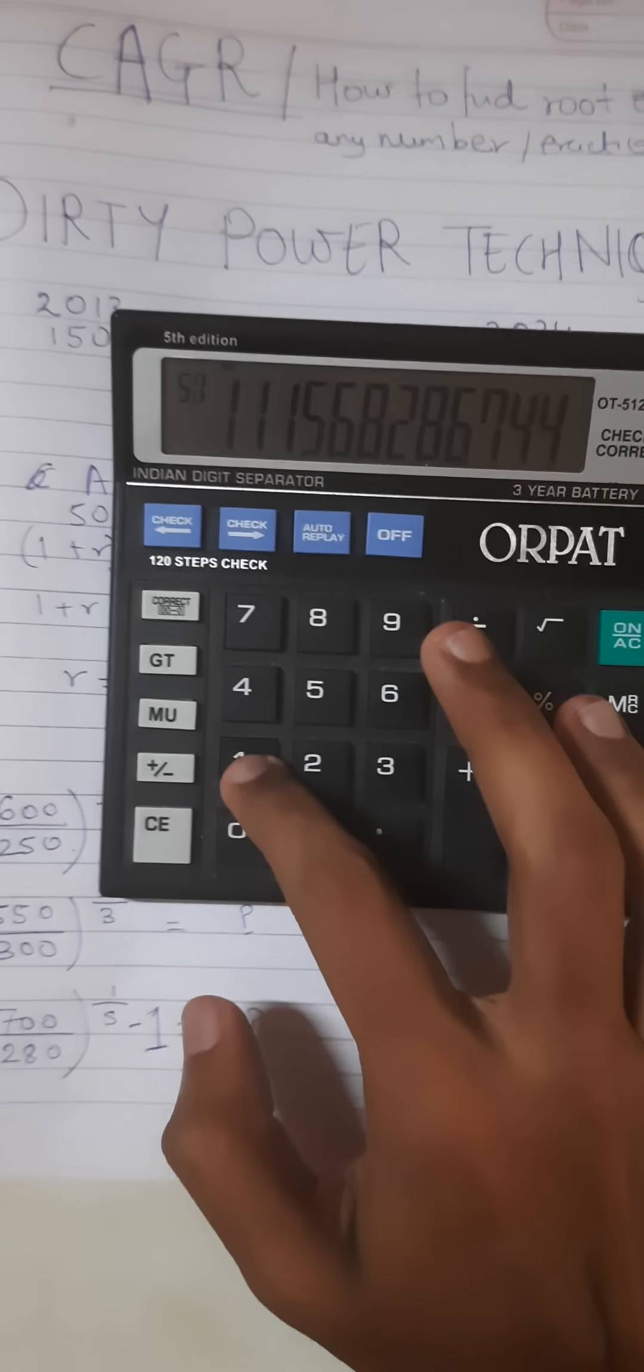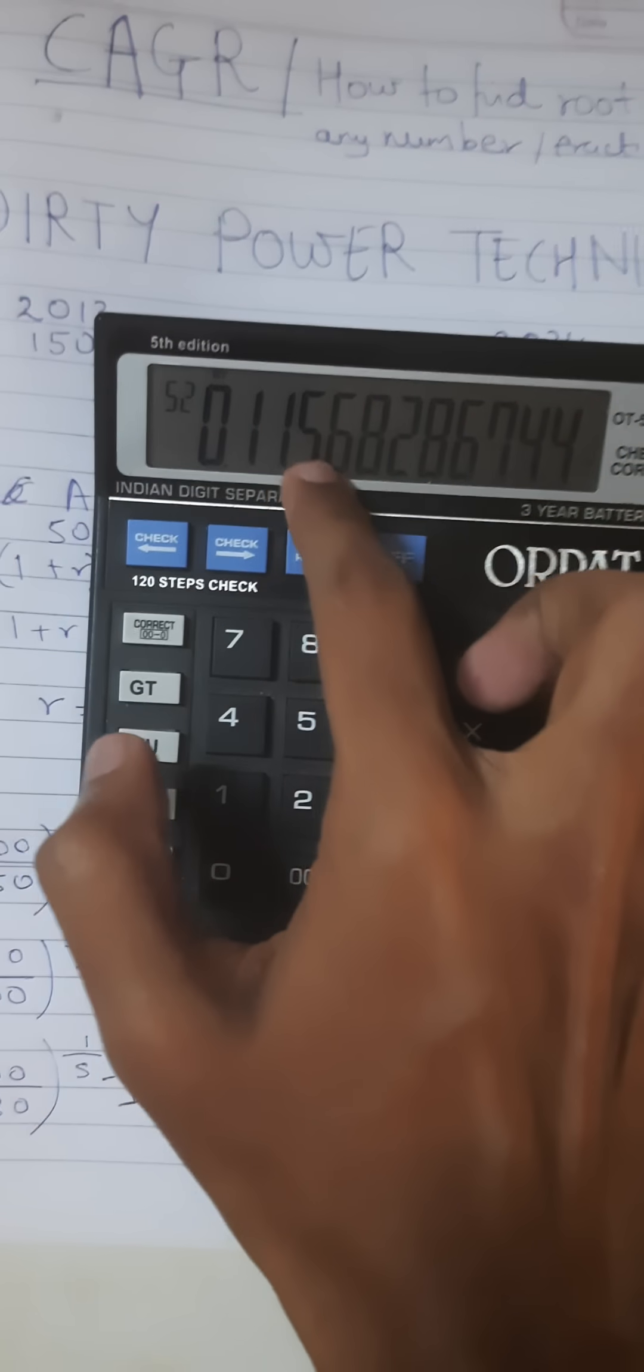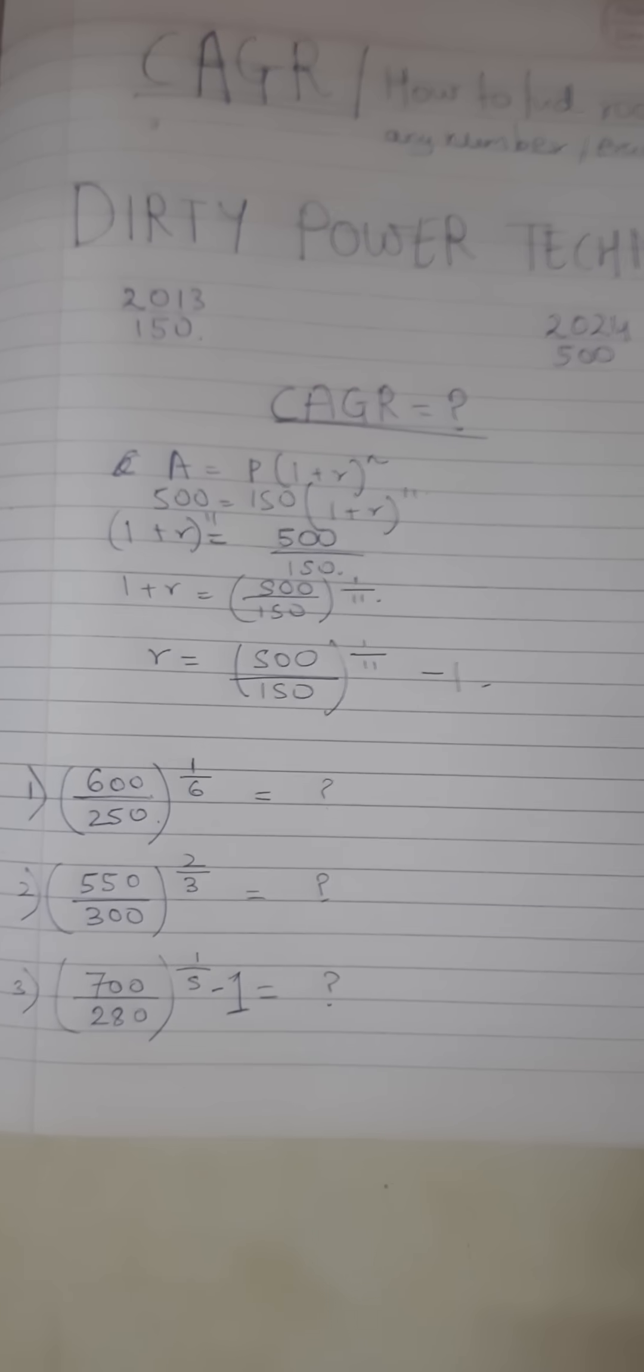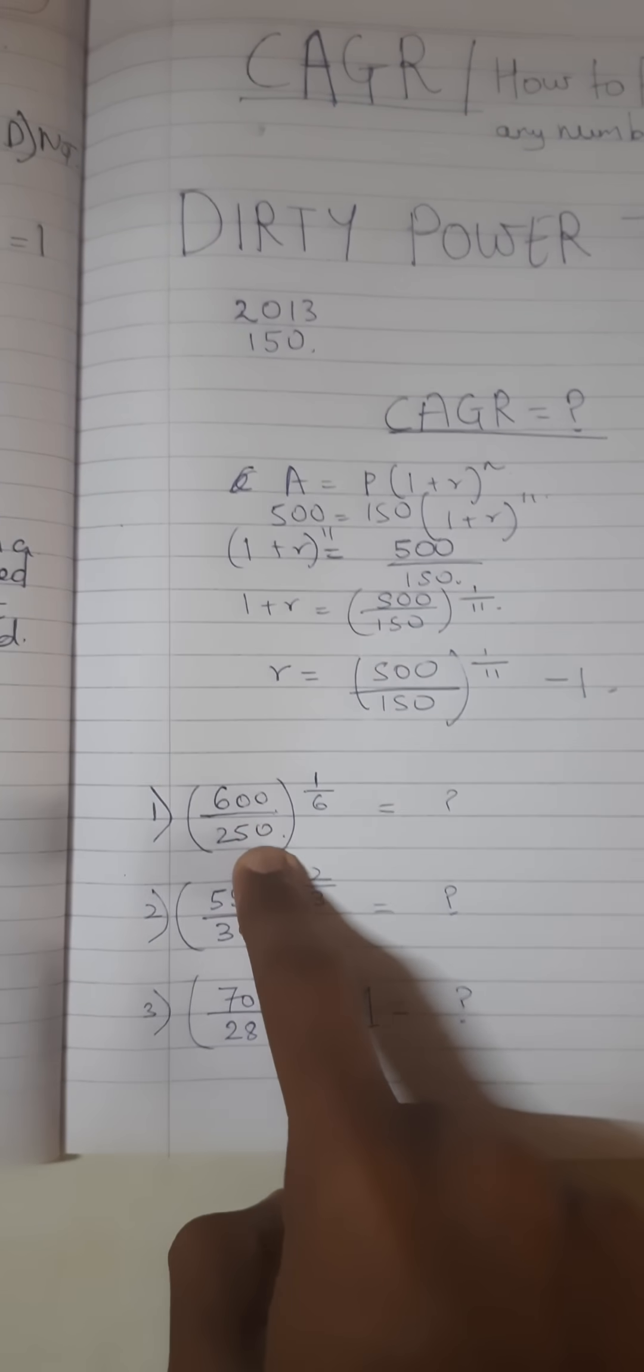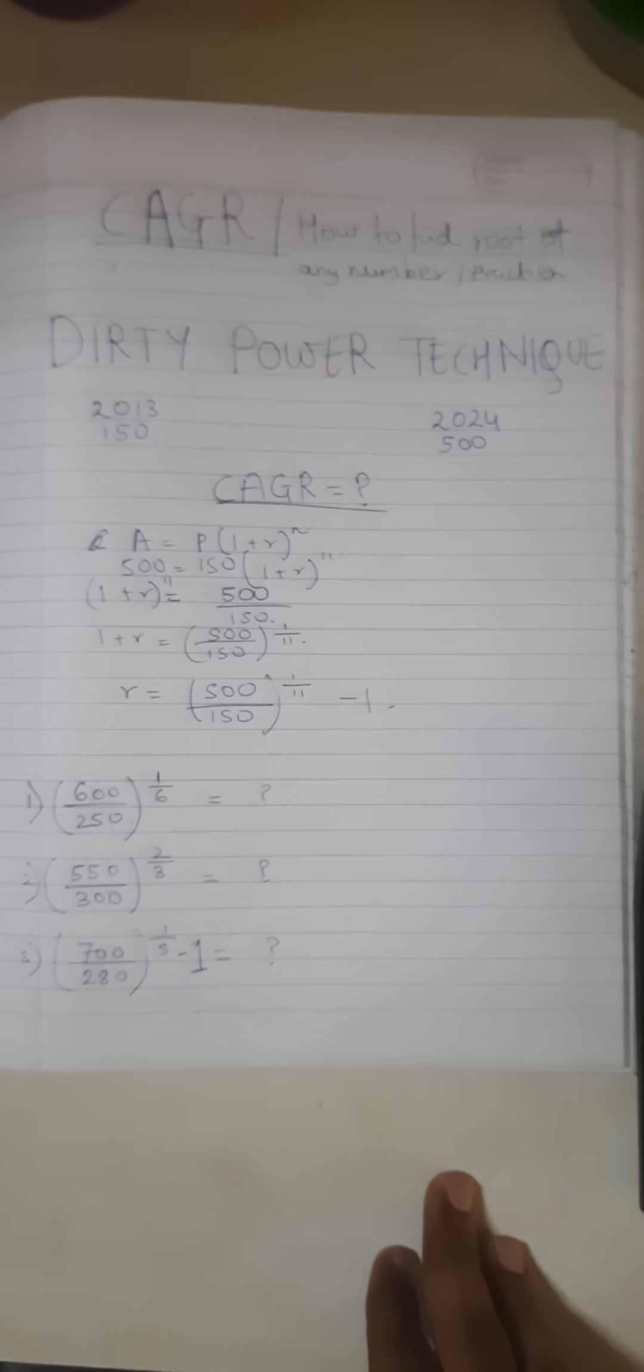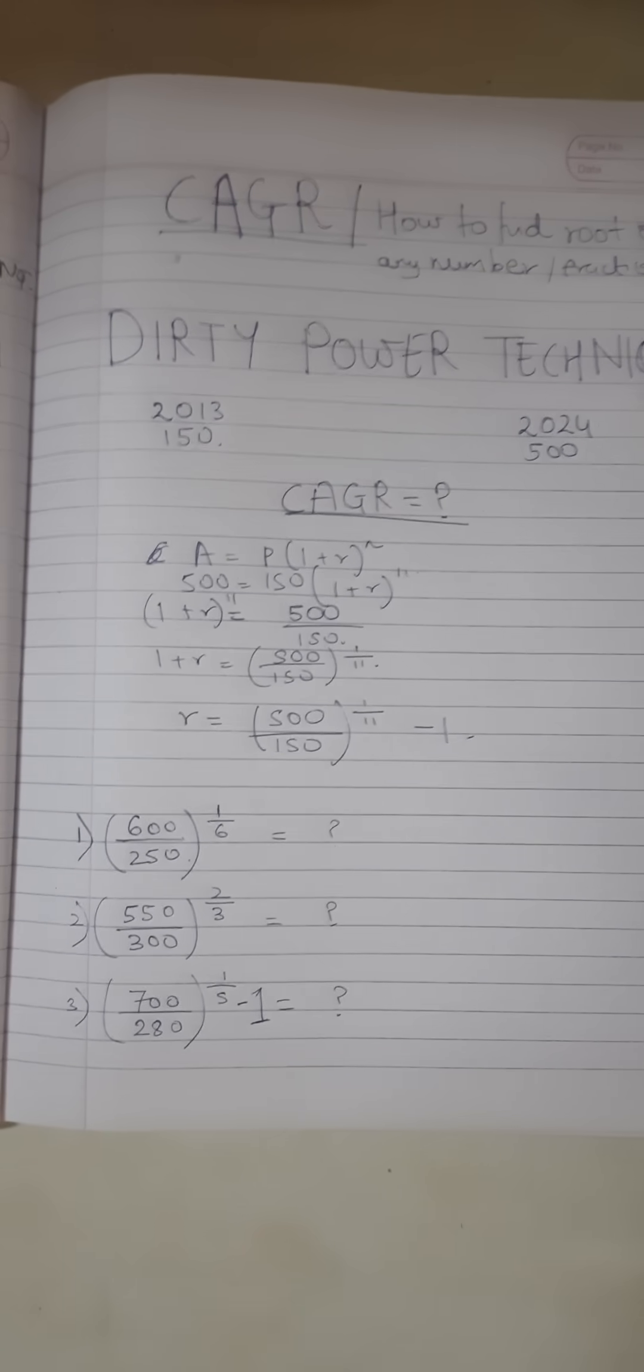And now we have to subtract 1 to find r. So it's approximately 11.57. This is the CAGR. Now you all can try these questions and let me know the answers in the comment section. Thank you.